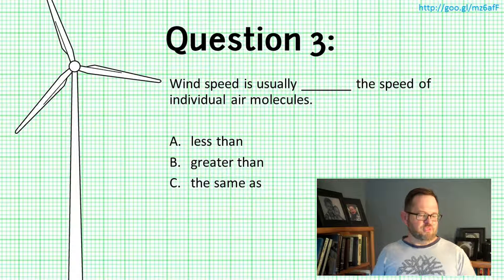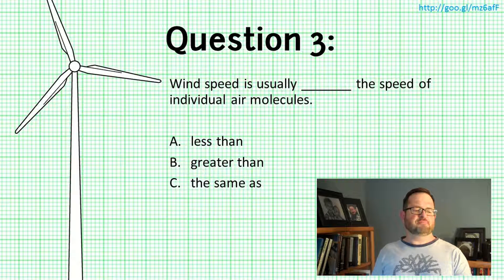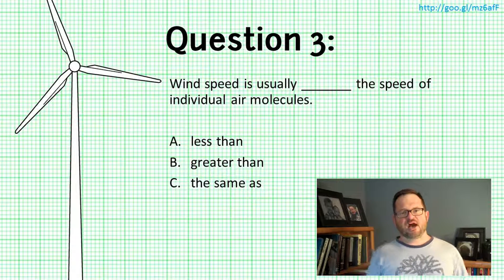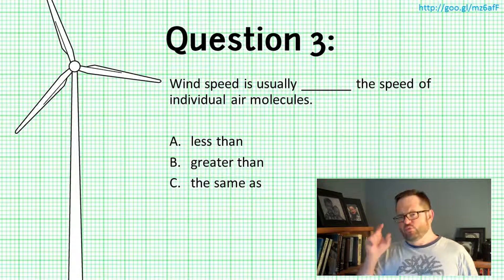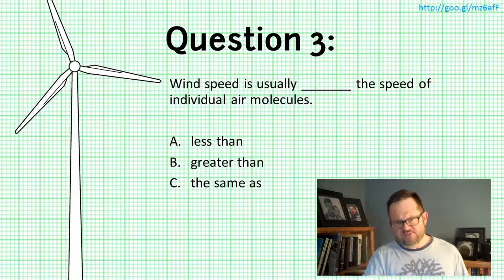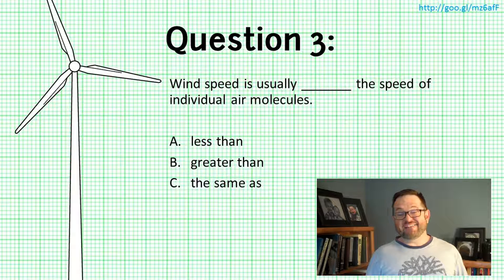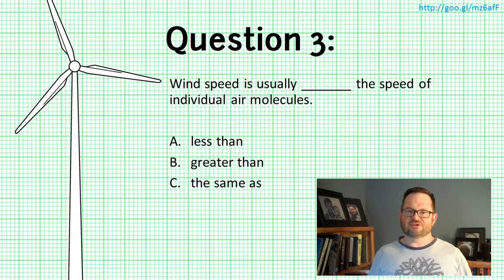Here's question three. Wind speed is usually blank the speed of individual air molecules — less than, greater than, or the same as. How is the speed of the wind related to the speed of the individual molecules inside of a volume of air? Make a choice from those three options and get a little feedback before we move on to part two of this lecture.